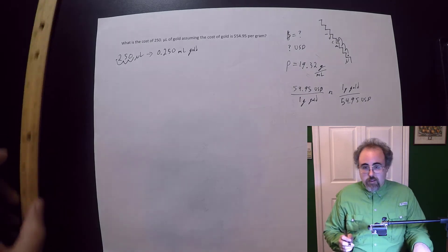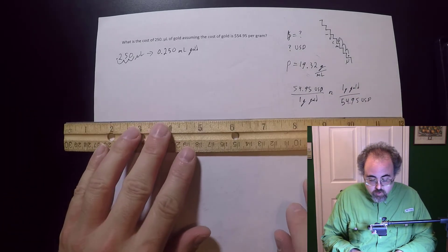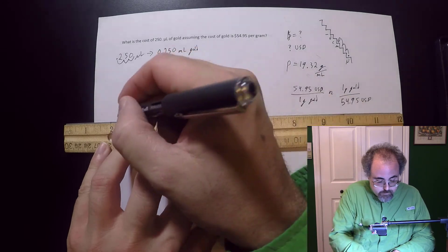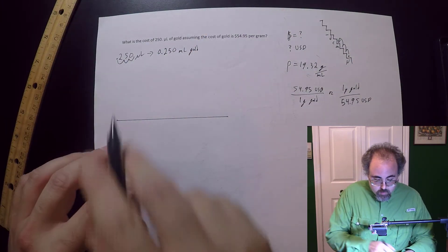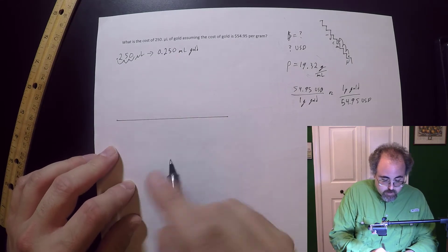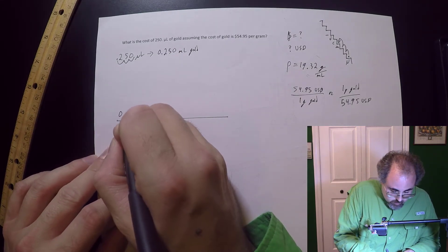So let's start doing this and I'm going to do this line mole which is usually the way I end up doing this. Start out with what I know. What I know is this quarter milliliter of gold.